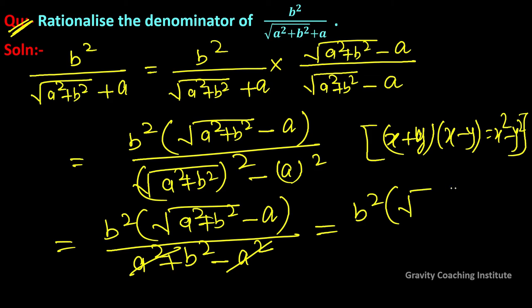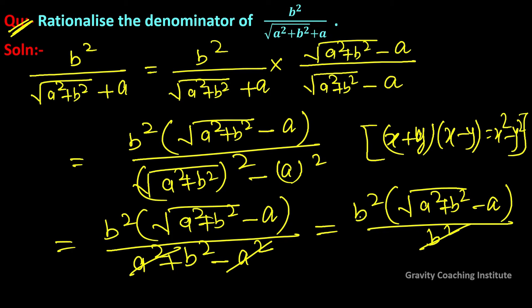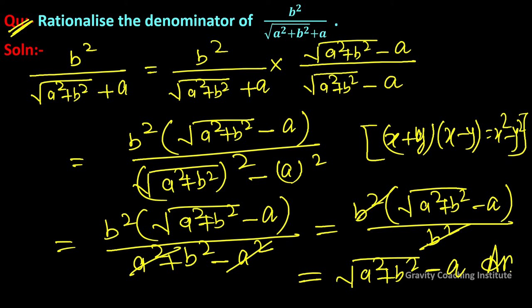So we have b² into (under root (a² + b²) minus a) upon b². The b² in the numerator and denominator cancel, giving the final answer: under root (a² + b²) minus a.